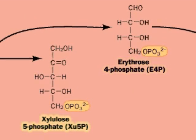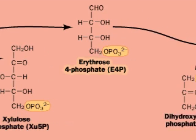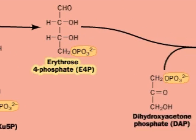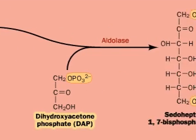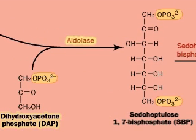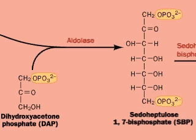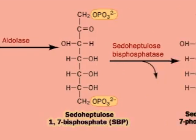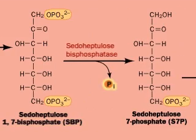E4P and dihydroxyacetone phosphate, in a reaction catalyzed by aldolase, combine to form the seven-carbon compound cetoheptalose 1,7-bisphosphate, which then loses a phosphate to make cetoheptalose 7-phosphate, and forming xylulose 5-phosphate.